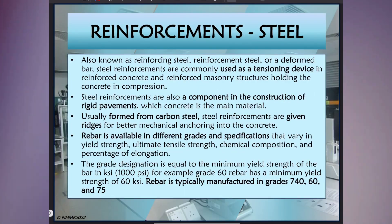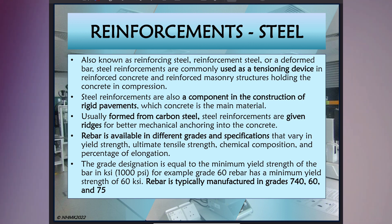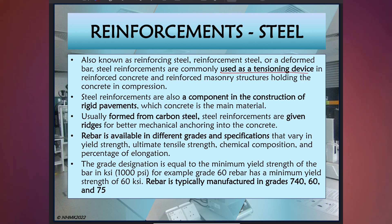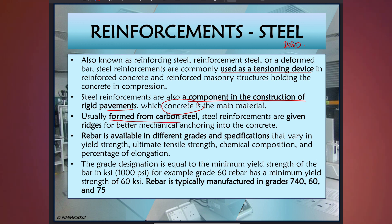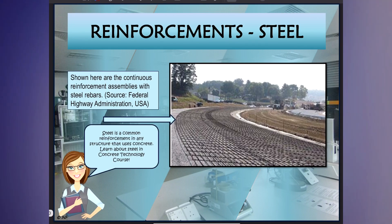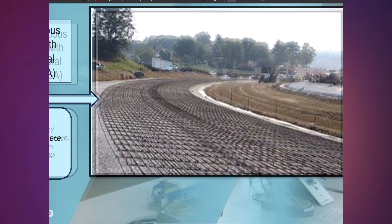Next we are going to discuss reinforcement, which consists of steel and also fibres. Steel, also known as reinforcing steel or rebar, is used as a tensioning device in reinforced concrete and is mainly used in rigid pavements. Steel reinforcements are a component in the construction of rigid pavements where concrete is the main material. Steels are formed from carbon steel. This is an example of continuous reinforcements used in laying rigid pavement, taken from the Federal Highway Administration, USA.